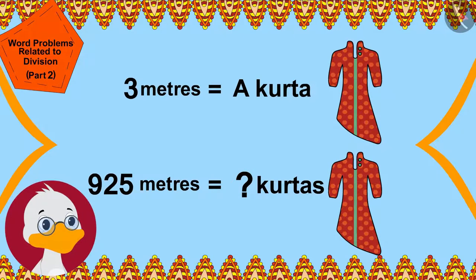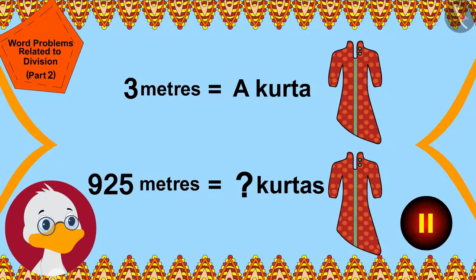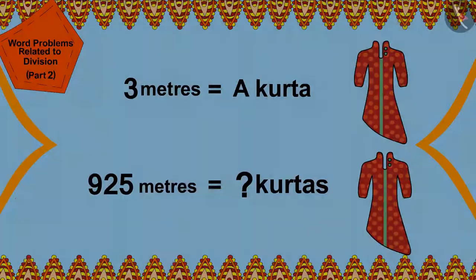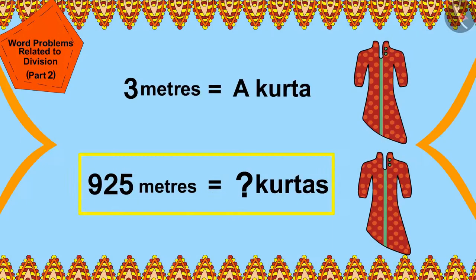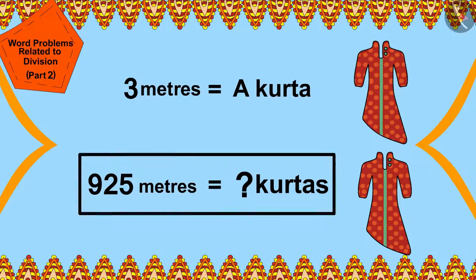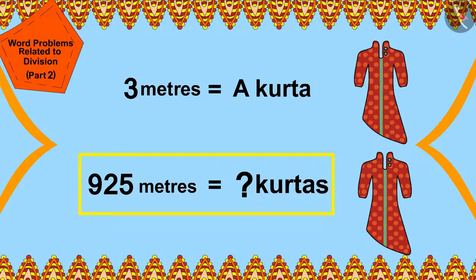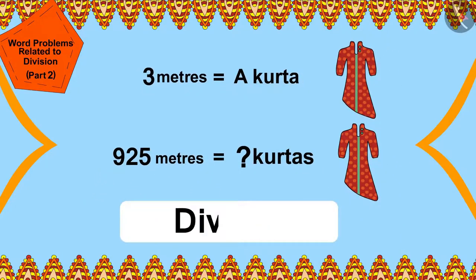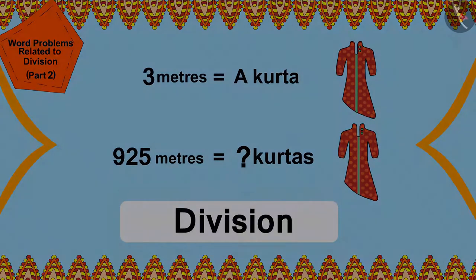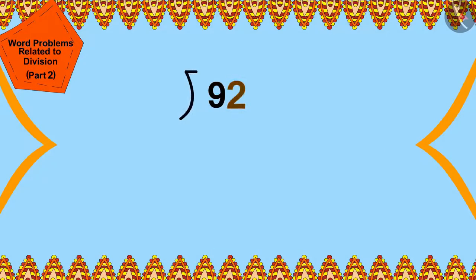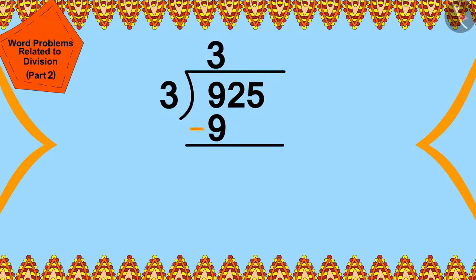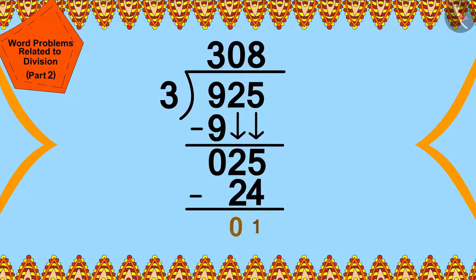If you wish to, you can pause the video and find the answer. To find the solution to this question, we will use the process of division. We can divide 925 by 3 in this way.